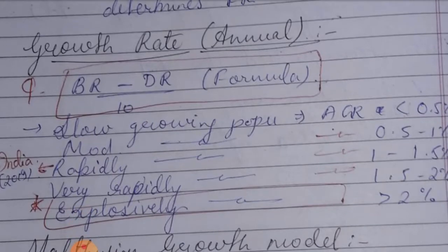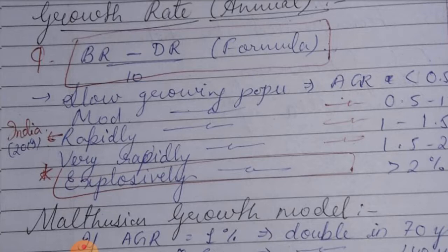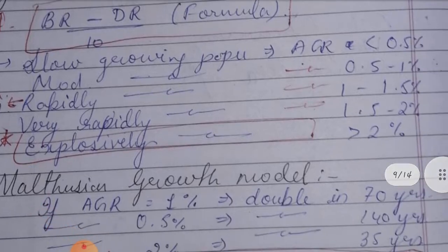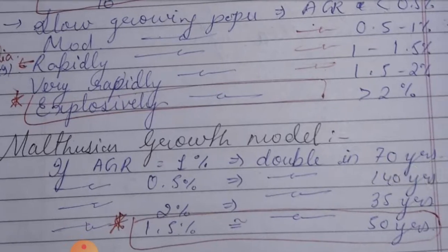Regarding Annual Growth Rate (AGR) categories: a population is considered slow growing if AGR is 1–1.5%, very rapidly growing if AGR is 1.5–2%, and explosively growing if AGR is greater than 2%.